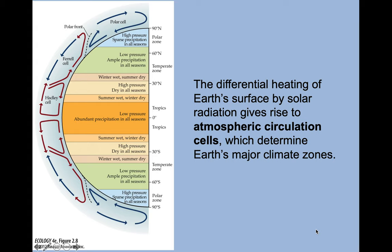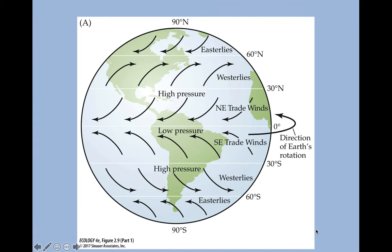Welcome back. This is part 2 of chapter 2, continuing from where we left off. We had been talking about air circulation cells and how they cause areas of low and high pressure, and low and high precipitation. The general idea to take away from this section is that the differential heating of Earth's surface by solar radiation gives rise to atmospheric circulation cells, which strongly determine Earth's major climate zones.